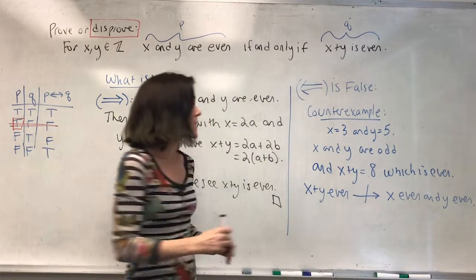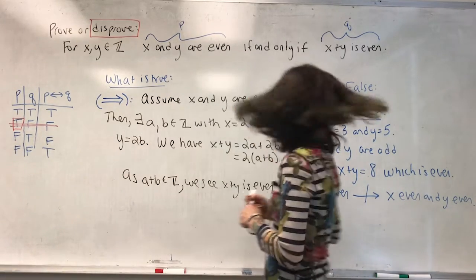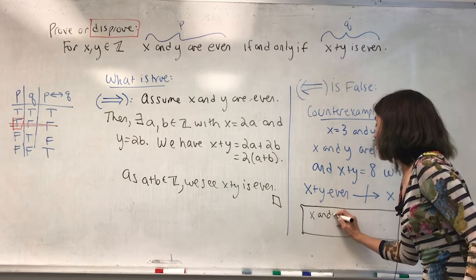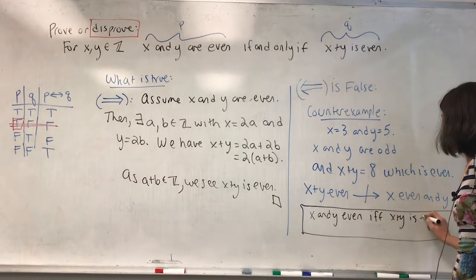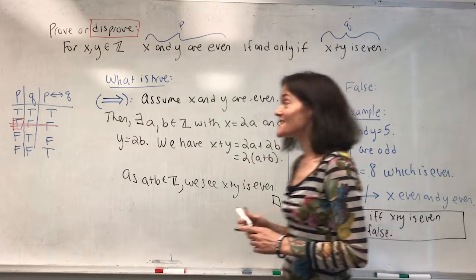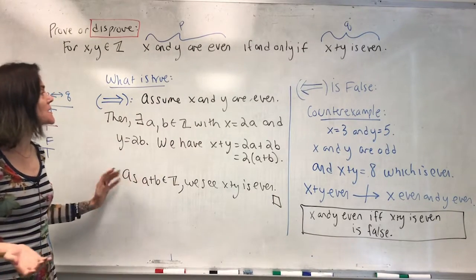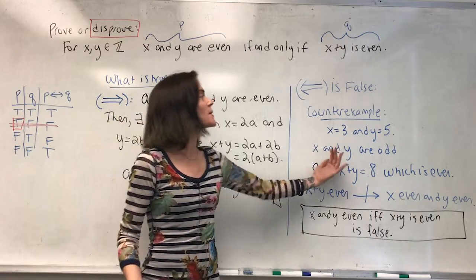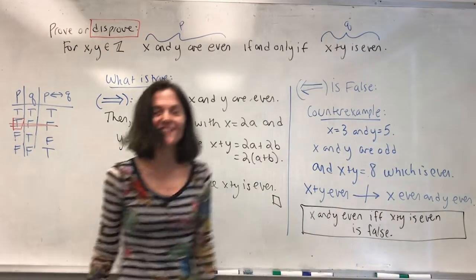This direction is false. And overall, we show that we can have a place where q is true, p is false, making the if and only if false. So the if and only if - x and y even if and only if x plus y is even - is false. Because this one direction is not true. I like this example, despite the fact that the idea of even and odd is not hard, because we see an example of an if and only if: one direction is true, but that does not mean anything about the if and only if. We find a counterexample in one direction, and that makes the overall if and only if false.